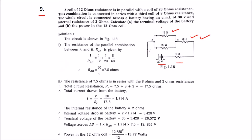First we need to find the terminal voltage. Terminal voltage is the supply voltage minus the voltage drop across the internal resistance. To find that voltage drop we need the value of I. To find I, we first need to calculate the equivalent resistance of all four resistors: 12 ohm, 20 ohm, 8 ohm, and 2 ohm.